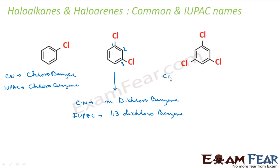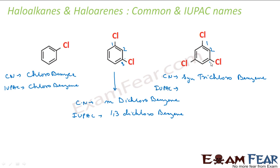Let's do this compound — it has 3 chlorines, symmetrically placed, so it will be sym-trichlorobenzene as the common name. For the IUPAC name, let's number it 1, 2, 3, 4, 5, 6 — even if you number from either side it is the same. I have chlorine at 1, 3, and 5, so it will be 1,3,5-trichlorobenzene. So these are the IUPAC names for these three compounds.